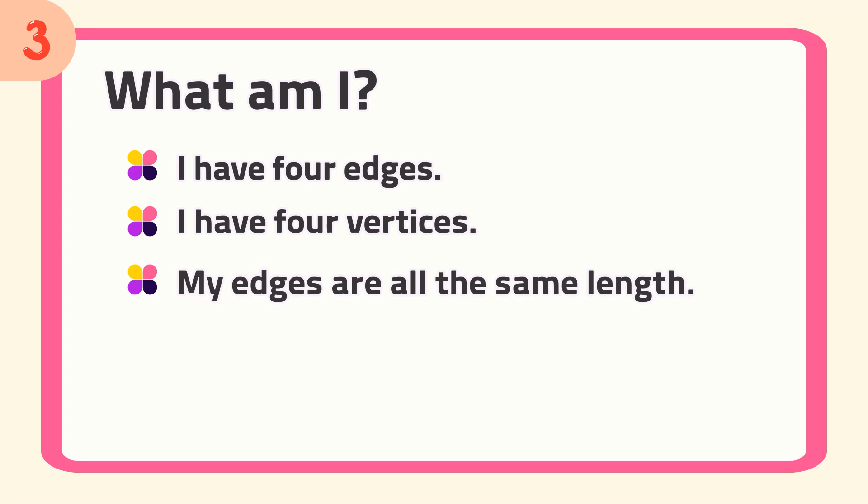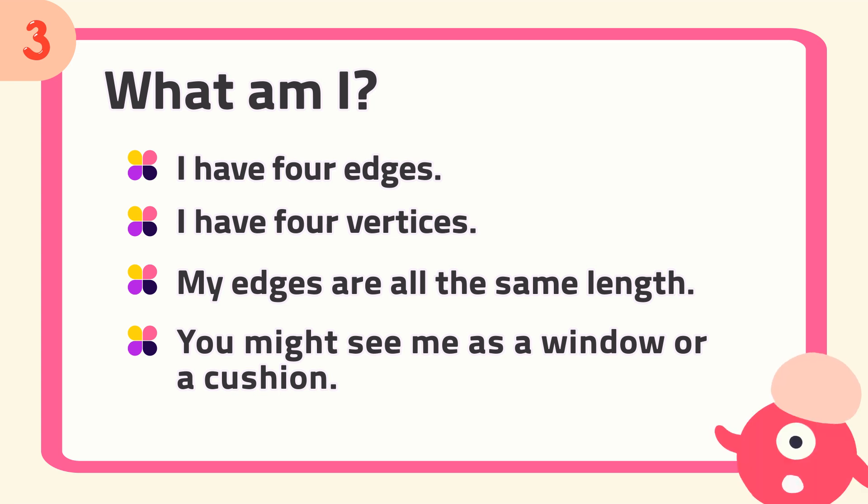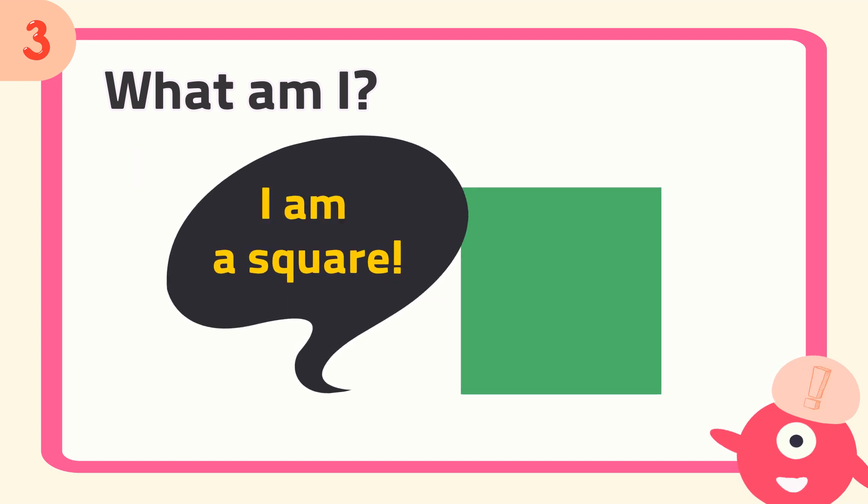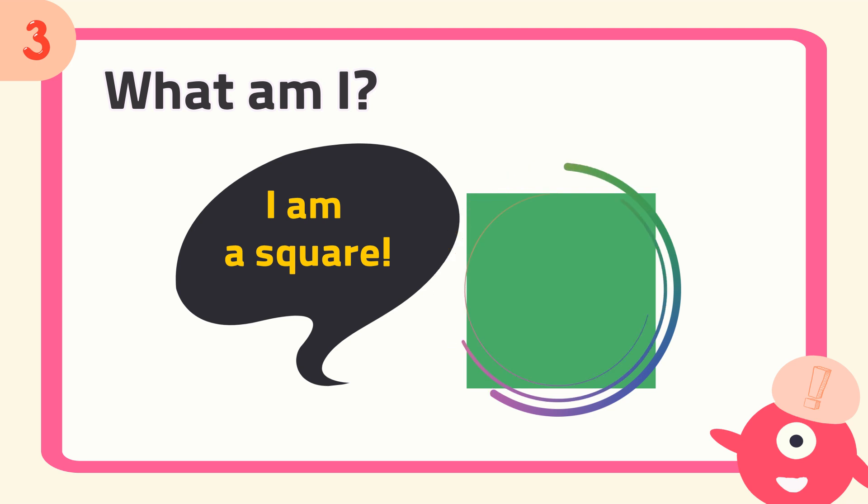Number three, what am I? I have four edges, I have four vertices, my edges are all the same length. You might see me as a window or a cushion. The answer is, I am a square.